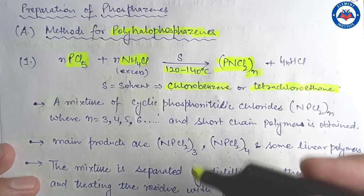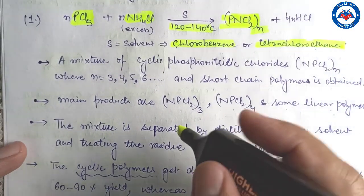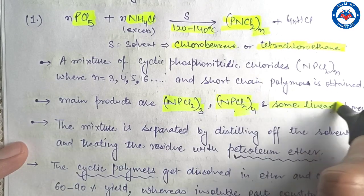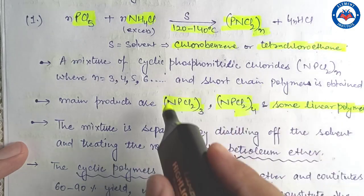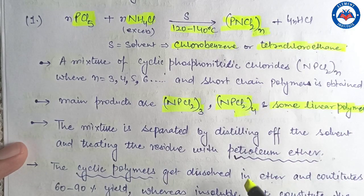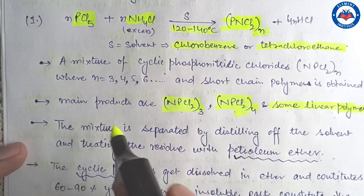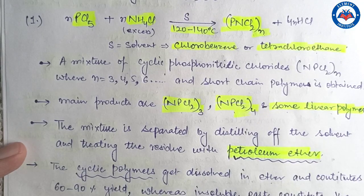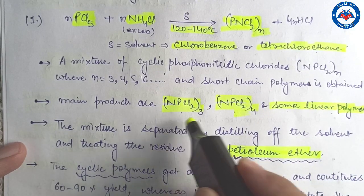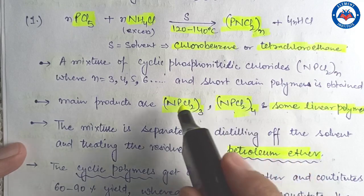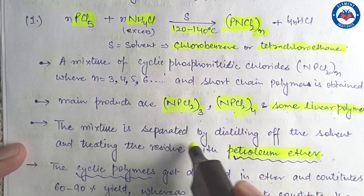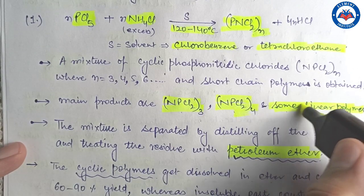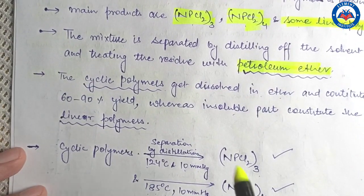In this reaction, a mixture of cyclic phosphonitrilic chlorides and some short-chain polymers are obtained. The main products are cyclic trimers, tetramers, and some linear polymers. This mixture is separated by distilling off the solvent and treating the residue with petroleum ether. The cyclic trimers and tetramers are highly soluble in ether and dissolve, while the solid left behind contains the linear polymers.